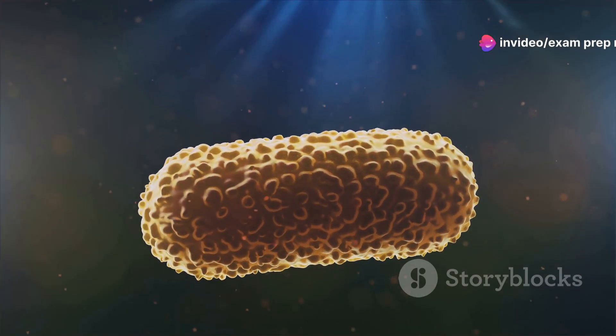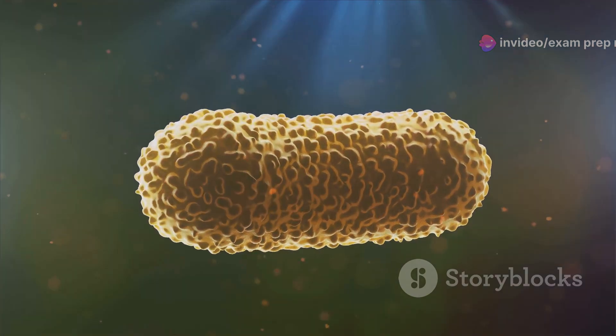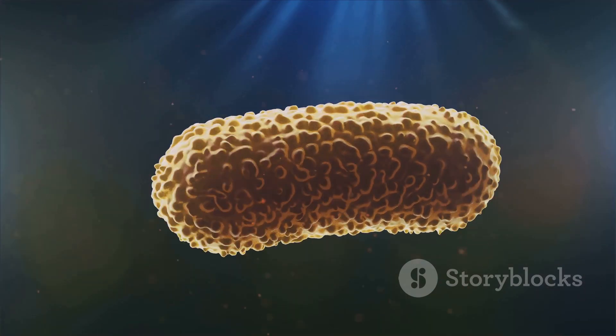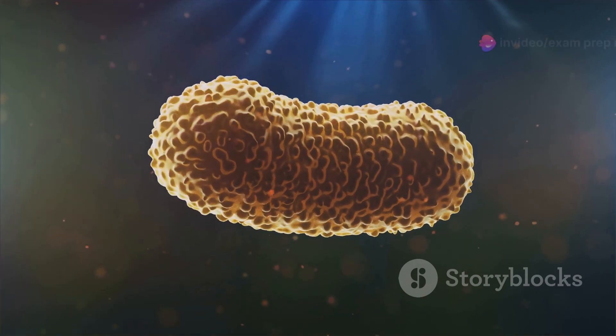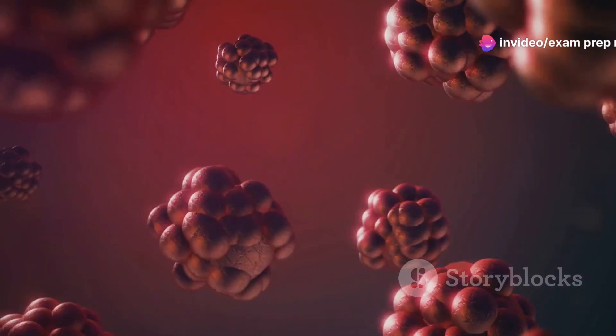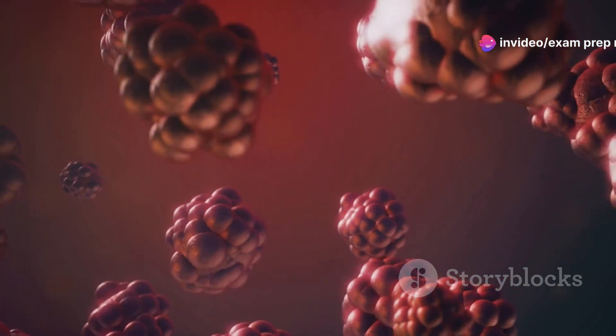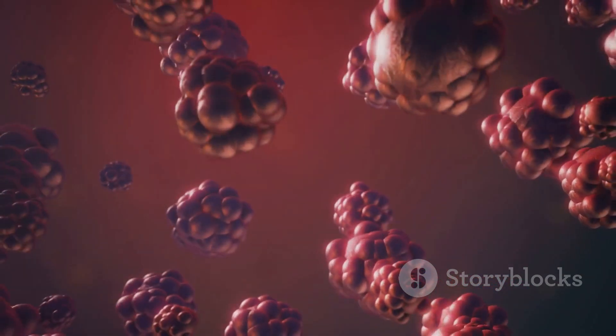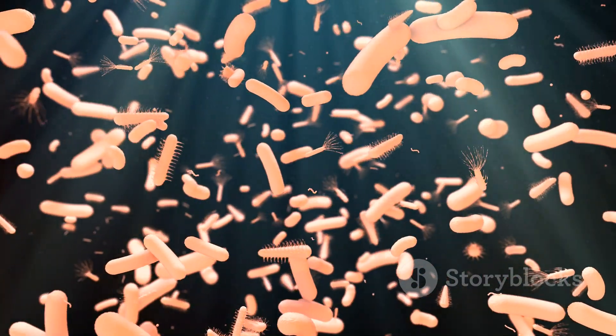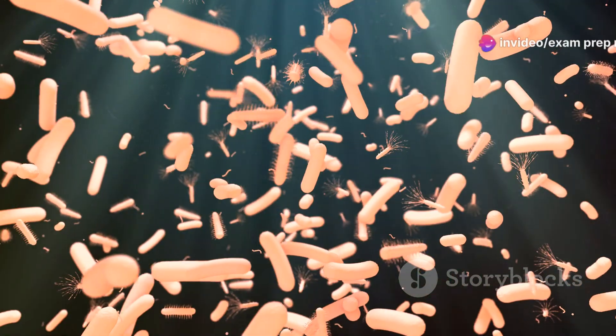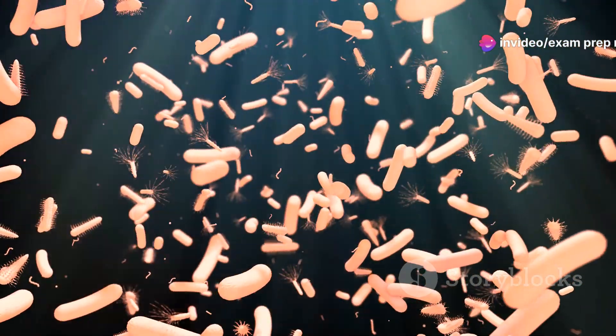Inside the plasma membrane lies the cytoplasm, a jelly-like substance that houses the cell's essential components. Floating within the cytoplasm is the nucleoid, a region containing the bacterial DNA. Scattered throughout the cytoplasm are ribosomes, tiny protein factories that build all the proteins the cell needs to function. While they may be small, these prokaryotic cells are incredibly efficient and adaptable, allowing them to thrive in diverse environments all over our planet.